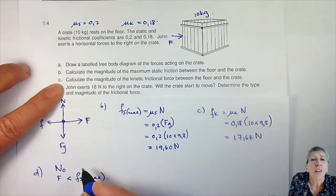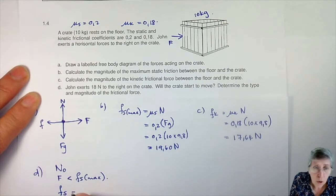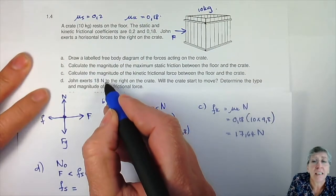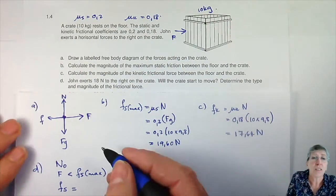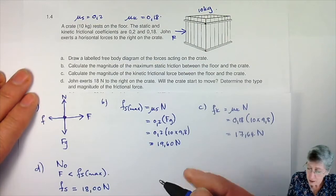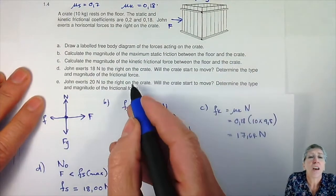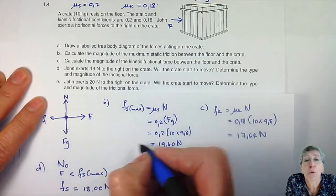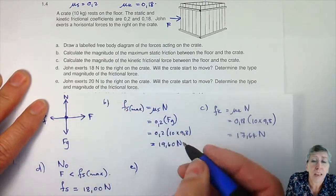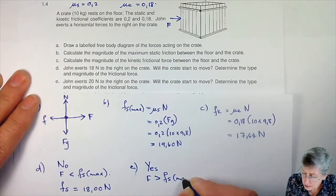They ask you to determine the type and magnitude of the frictional force. Since it's not moving, it's going to be static. It can resist with 19.6, but if I'm only pushing with 18, it's not going to push back with 19.6 - it's only going to do 18 as well. Number E: John now exerts 20 N on the crate. It can only resist with 19.60, so at that moment when he pushes with 20, it will move. The applied force is now bigger than the maximum static friction, so the answer is yes, it will move.